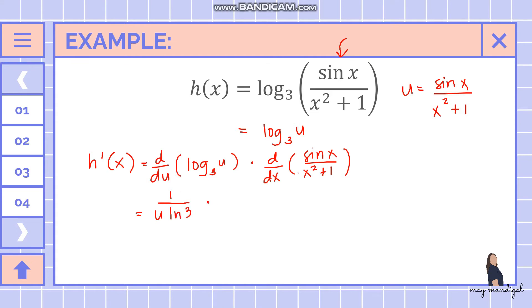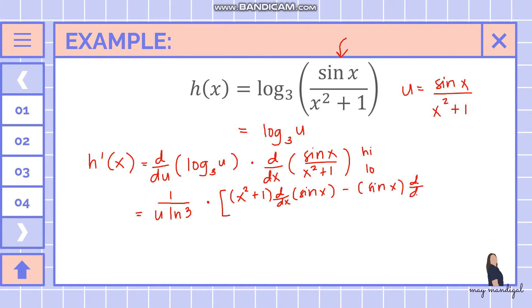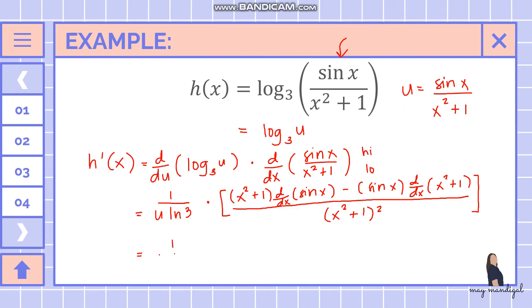Looking at the inner term, we have two terms — sine of x and x squared plus one — separated by division, so we apply the quotient rule. Setting sine of x as the 'high' and x squared plus one as the 'low', the quotient rule gives us: low d-high minus high d-low, all over low squared.